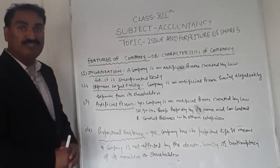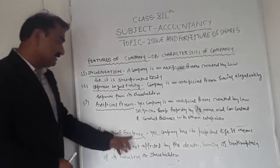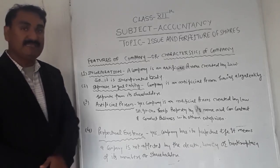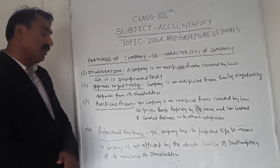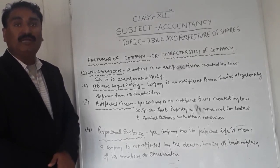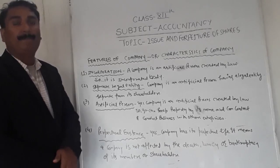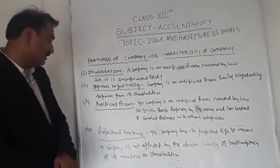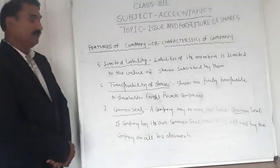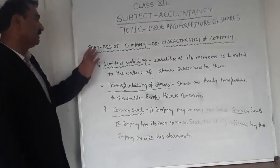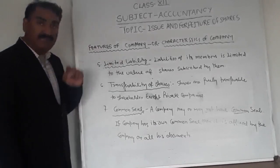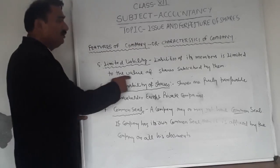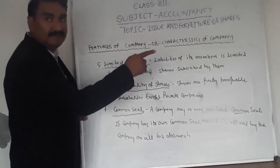The fourth feature is perpetual existence. A company has perpetual life, meaning the company's life will continue without any effect of the bankruptcy, lunacy, or any other conditions that happen to its members or shareholders. The fifth feature is limited liability. The liability of a member or shareholder is limited to the value of shares subscribed by them.